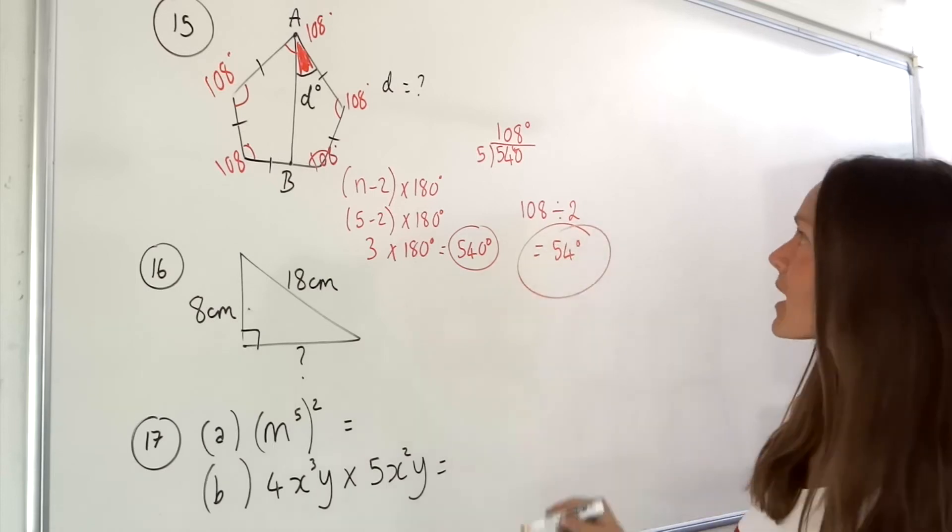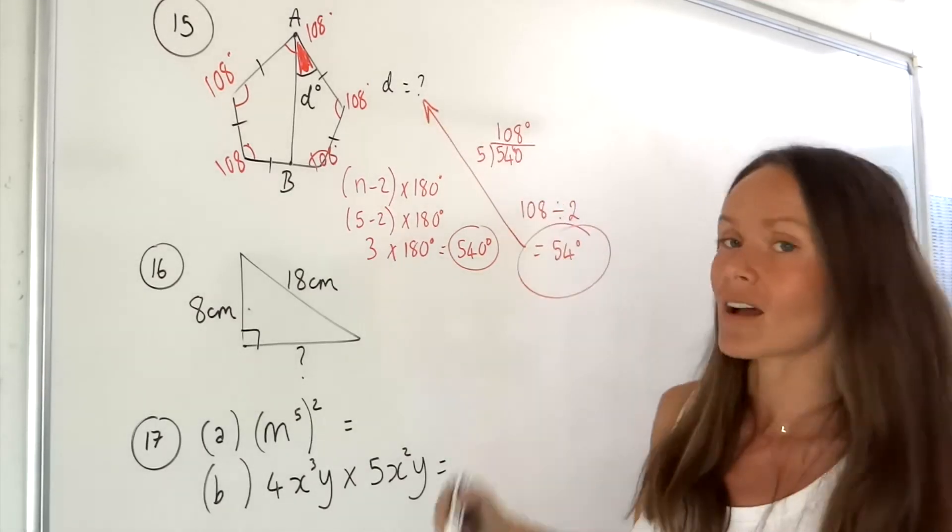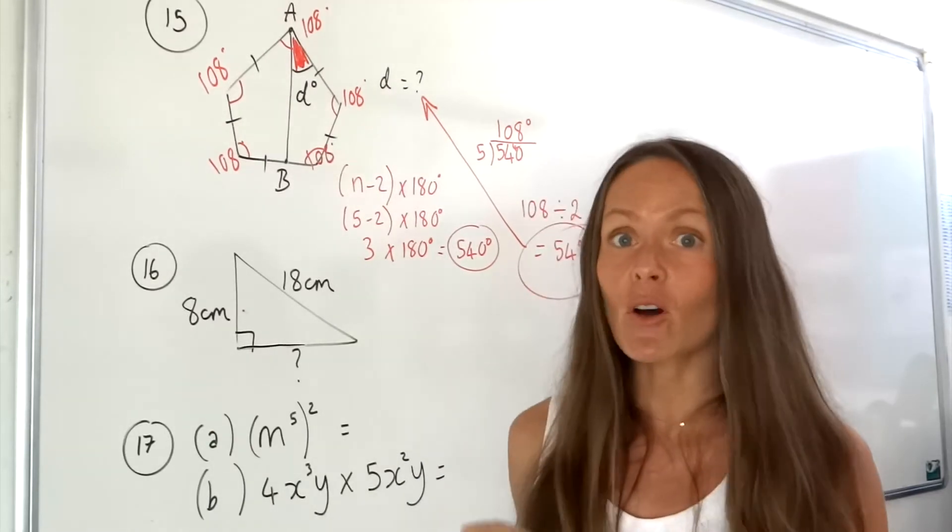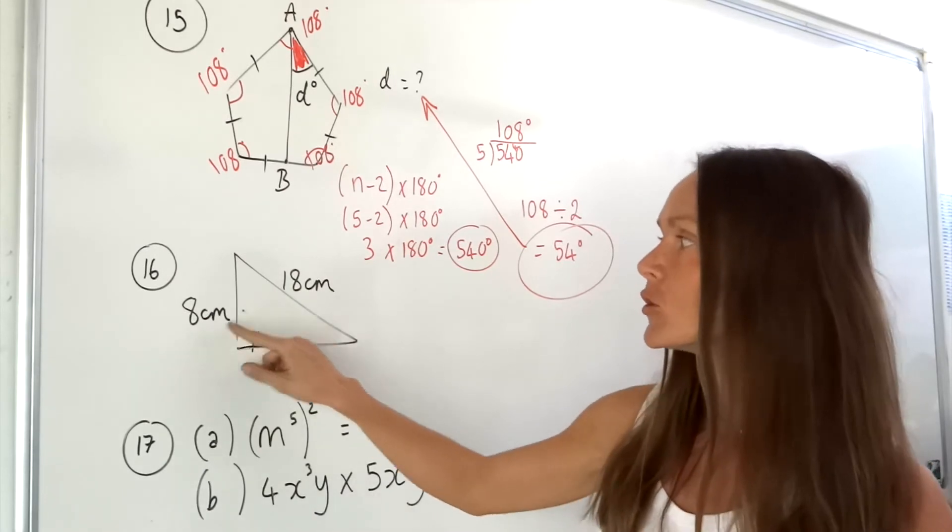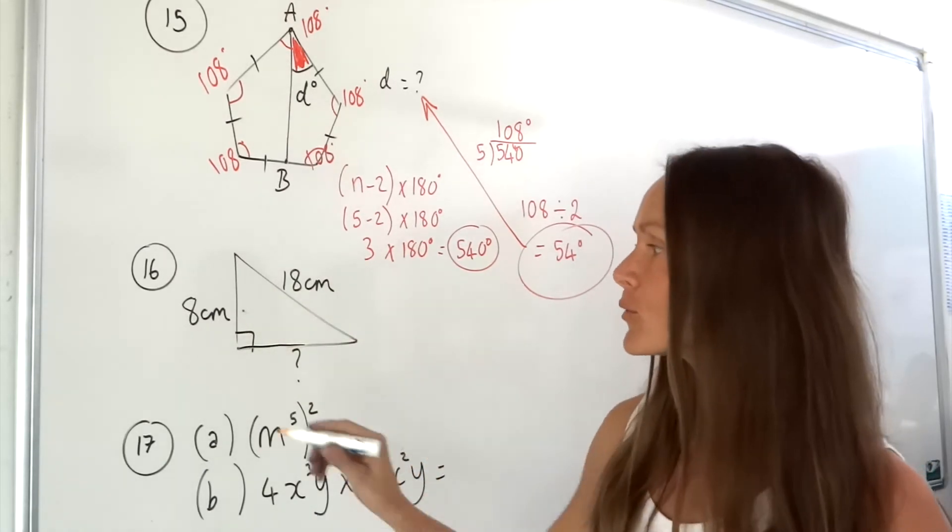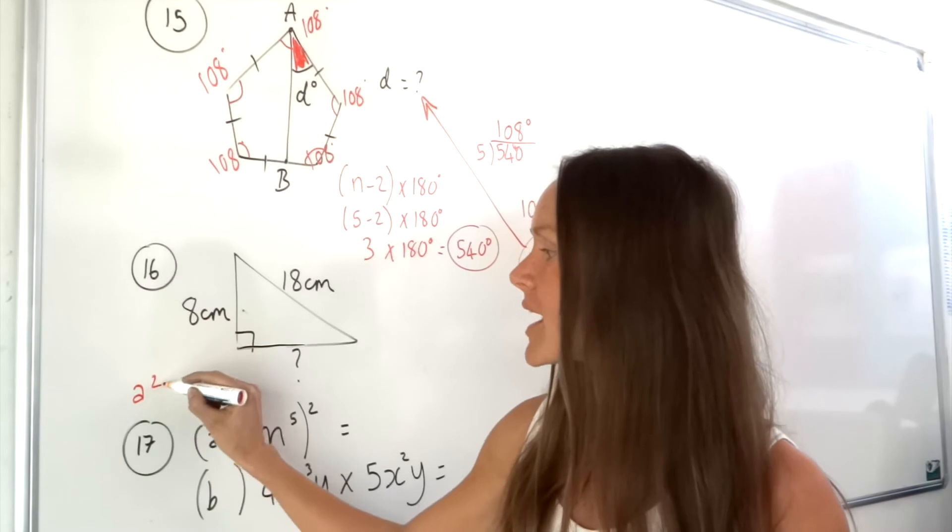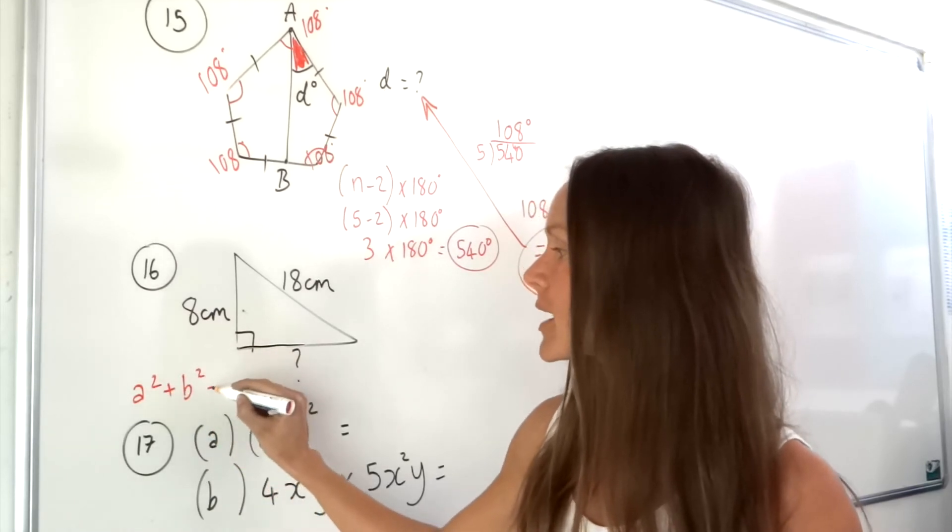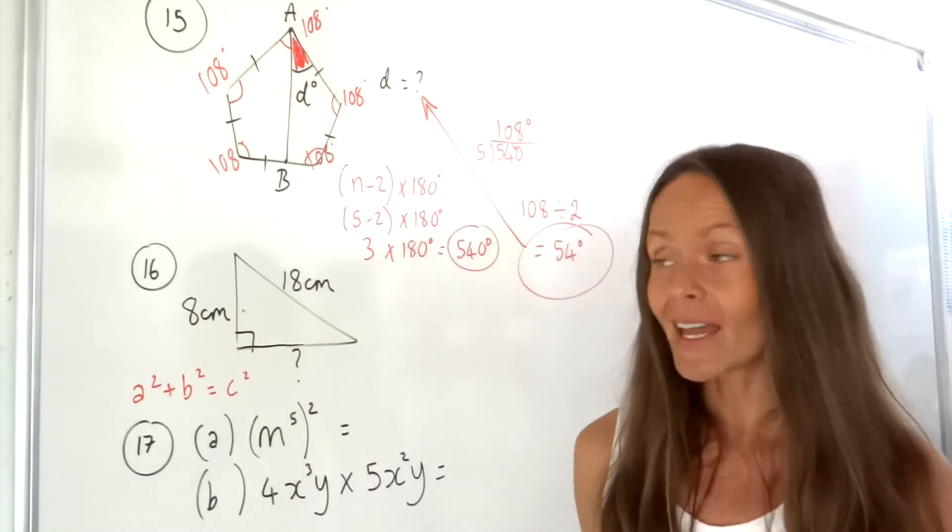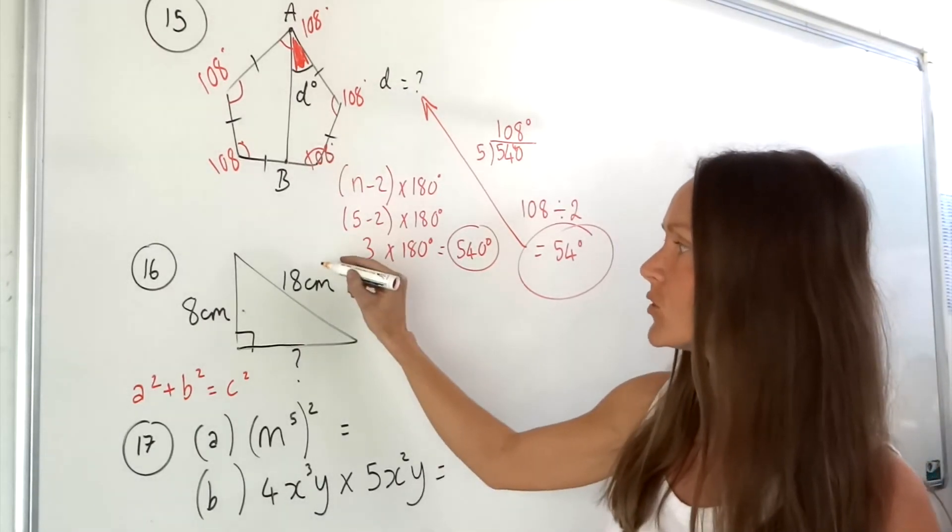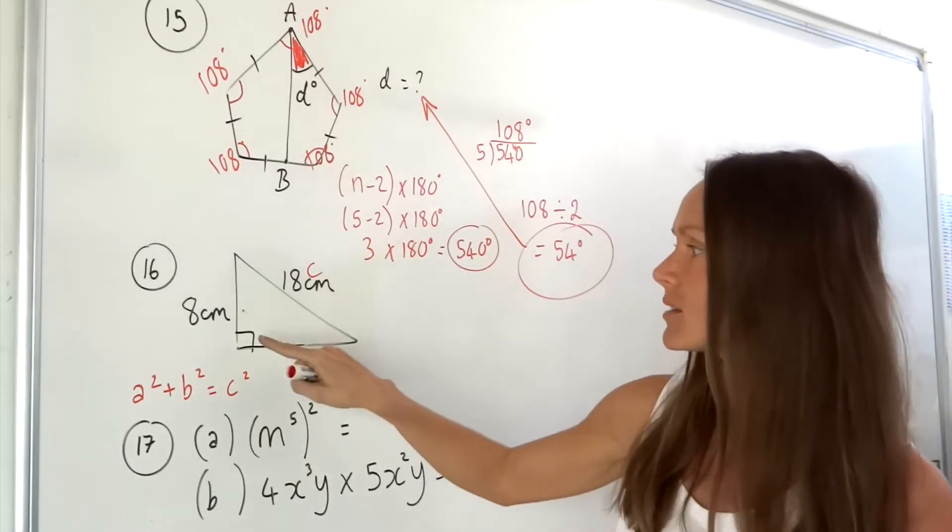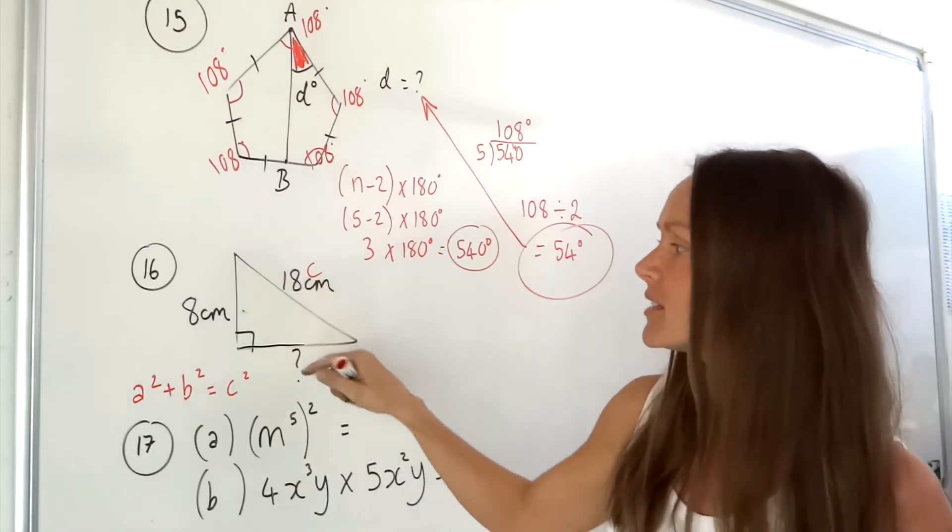In number 16 we've got a little bit of Pythagoras. It's a right angle triangle and we're working out a side using two sides. Remember Pythagoras's theorem is a squared plus b squared equals c squared. A, b and c are just the sides. C is always the hypotenuse which is the longest side opposite the right angle, and a and b it doesn't really matter which way round you label those two.